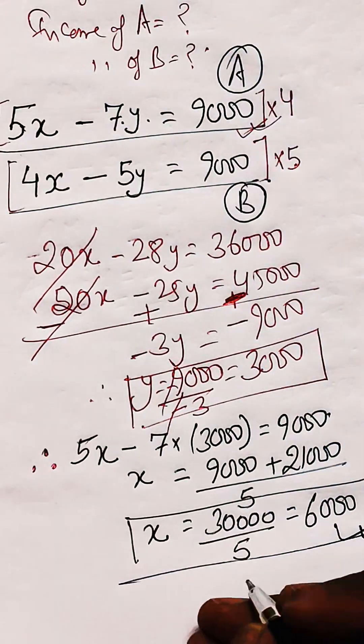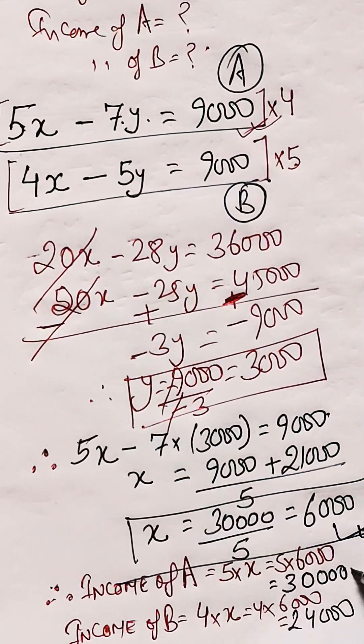Now the income of A and B is 5x and 4x. Income of A is 30000.